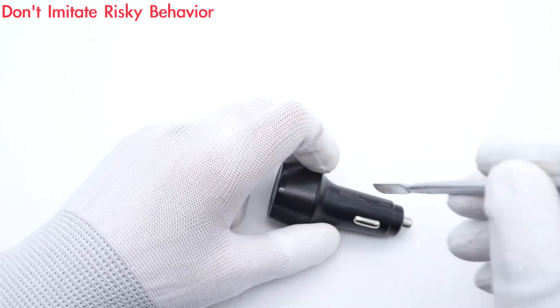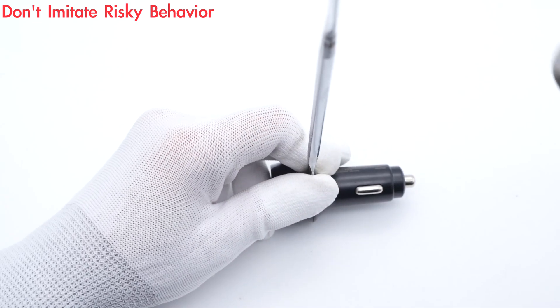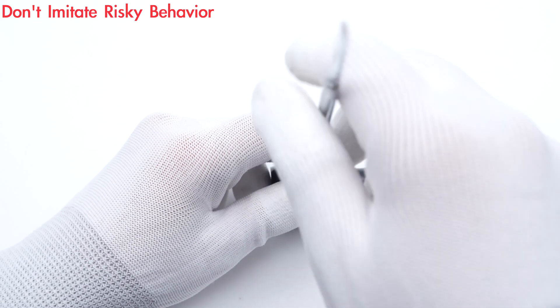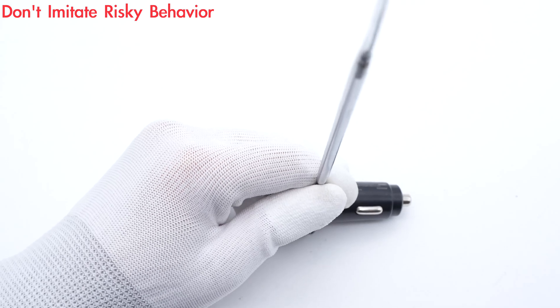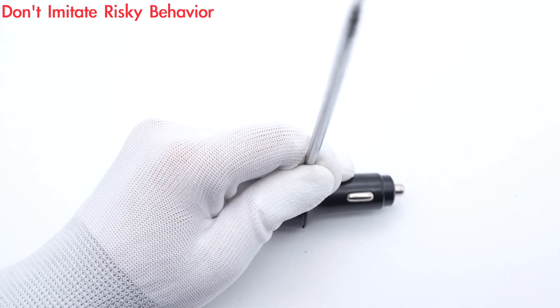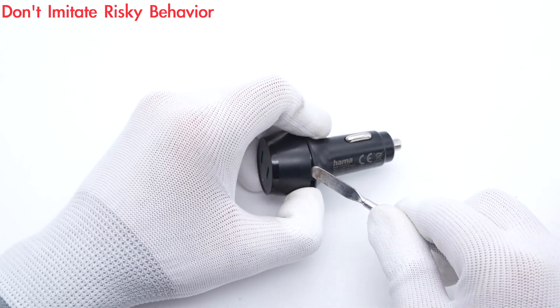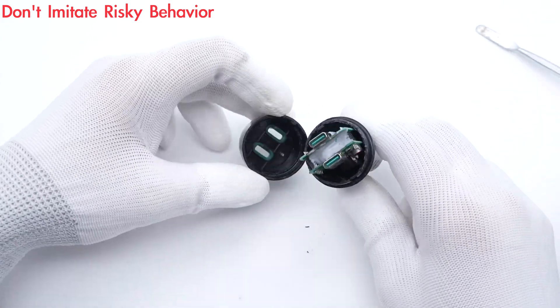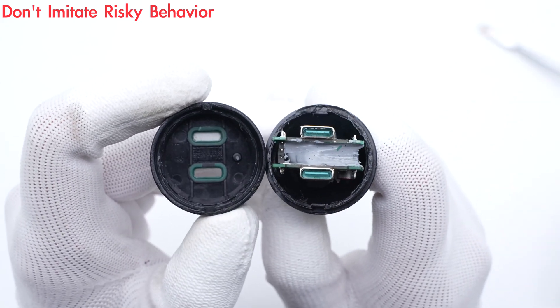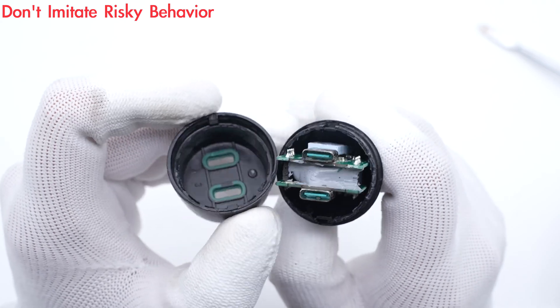After the brief introduction, let's use the spudger to pry along the gap. After removing the top case, we found some silicone adhesives between two PCBs for heat dissipation.